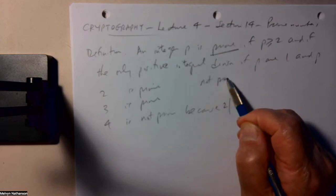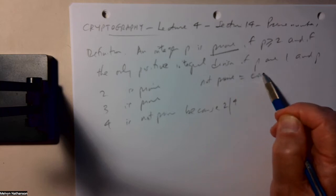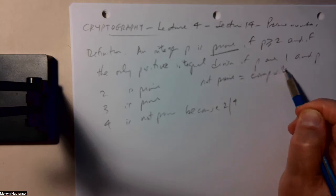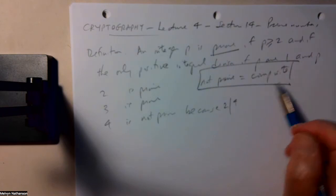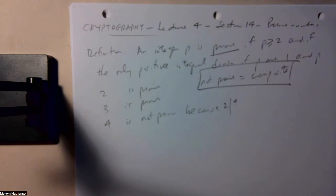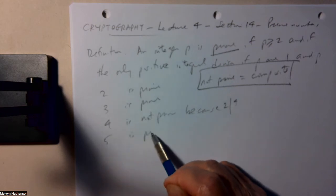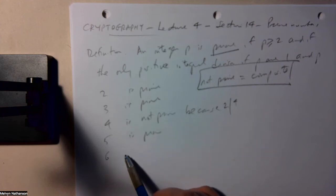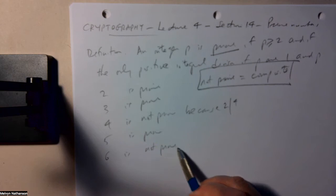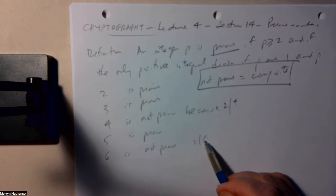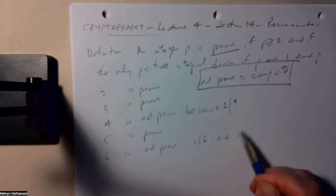Another name for a number that is not prime is composite. A composite number is a number at least two which is not prime. So 4 is composite. 5 is prime. 6 is not prime because, for example, 2 divides 6 and 3 divides 6.